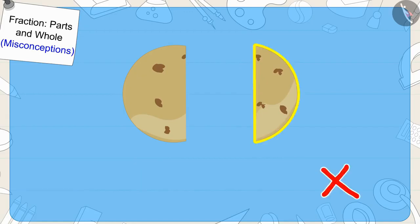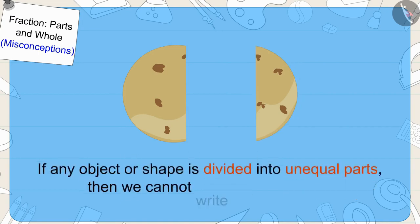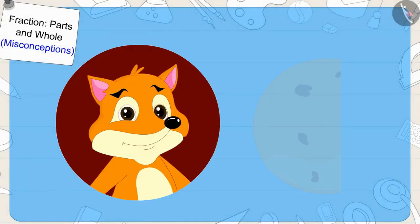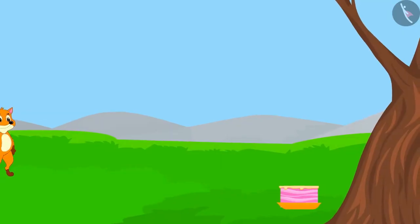Children, if any object or shape is divided into unequal parts, then we cannot write it as a fraction. Fractions are made only from equal parts. The Fox cleverly ate the larger piece of chapati.